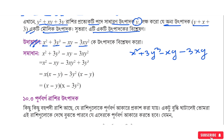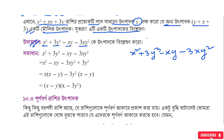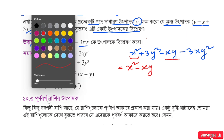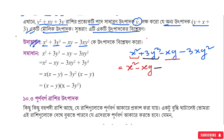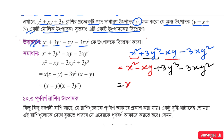We will take x common from certain terms. So we take x as the common factor. From the first group, x is common - x(x - y). The second group has 3y³ - 3xy, where 3y is common. We take x common from the first part and get x minus y as the bracket.